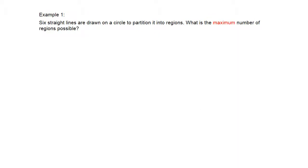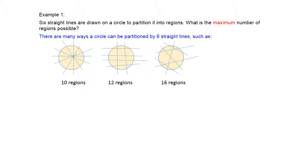Let's look at one example. Six straight lines are drawn on a circle to partition it into regions — what is the maximum number of regions possible? There are many ways a circle can be partitioned by six straight lines. If we do it randomly, we might get something like 10 regions, or 12 regions, or 16 regions. But what is the maximum number of regions possible?